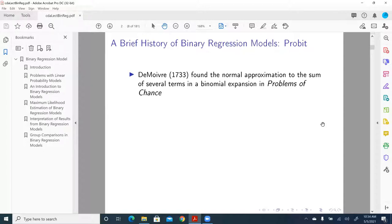So in 1733, DeMoivre found a normal approximation to the sum of several terms in the binomial expansion in problems of chance. So DeMoivre, he kind of derived approximately normal distribution.